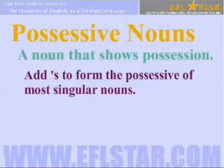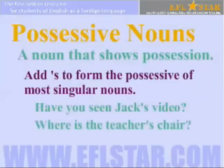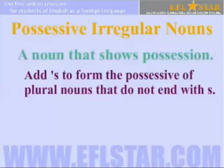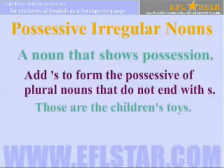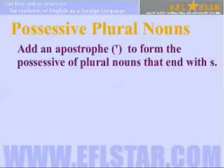Possessive Nouns. A possessive noun informs us that the noun is in possession of something. Add an apostrophe and S to form the possessive of most singular nouns. For example: Have you seen Jack's video? Where is the teacher's chair? Add an apostrophe and S to form the possessive of plural nouns that do not end with S. For example: Those are the children's toys.